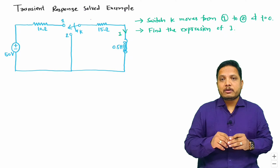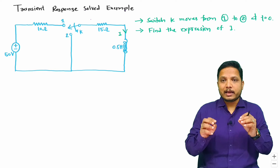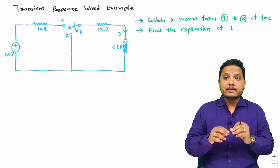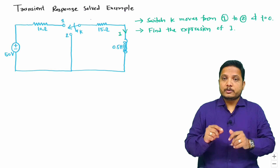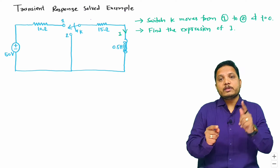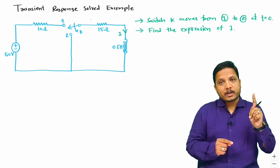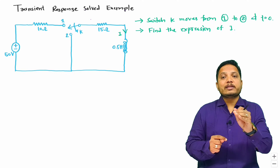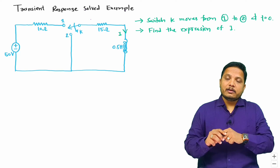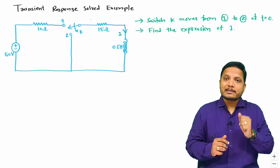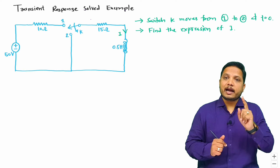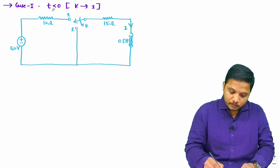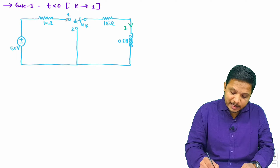Whenever you have a question based on transient response, one thing you need to take care of is to bisect situations with respect to time. Before t equals 0, the switch was at location 1, and at t equals 0 the switch moves to location 2. Let us consider the first case: for t less than 0, the switch is at location 1.